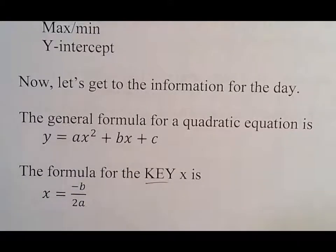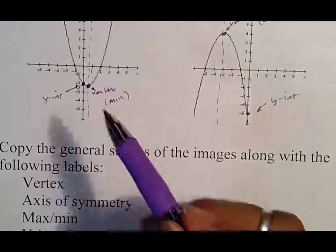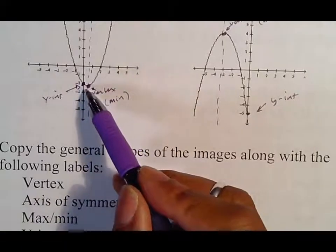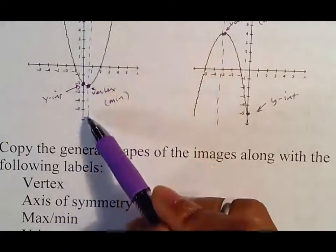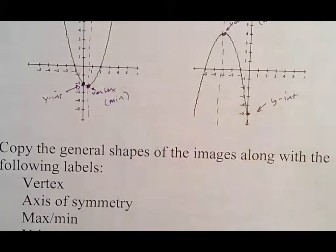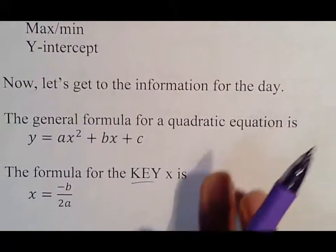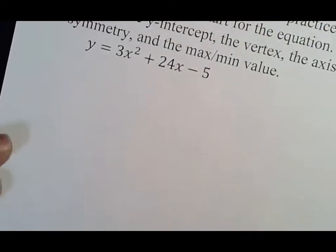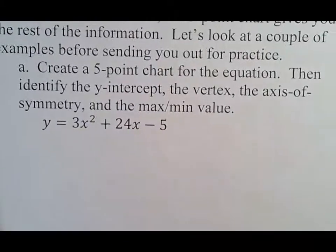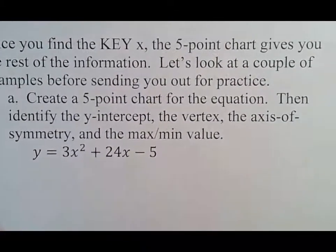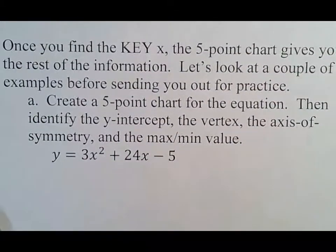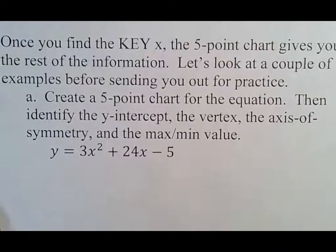This is a formula, but you should kind of have it memorized. You just take the opposite of B, double A, and that would be the key X you need. That key X gives us everything, because the key X leads us to our vertex. If it leads us to our vertex, it leads us to our axis of symmetry, it leads us to our minimum — it gives us a whole lot of information. Once you find the key, the five-point chart gives you the rest of the information.